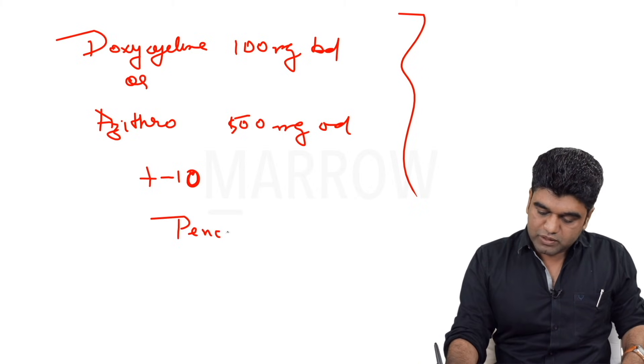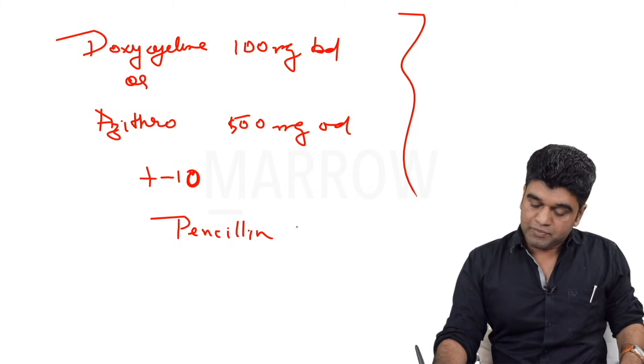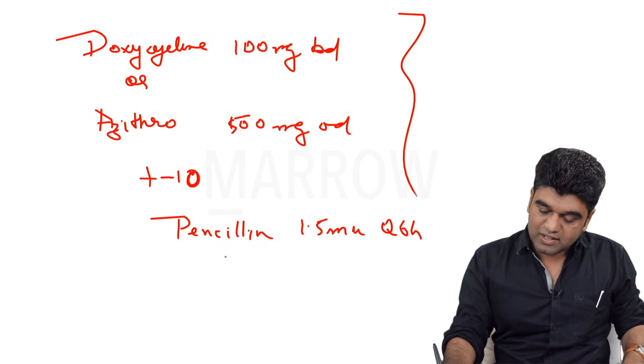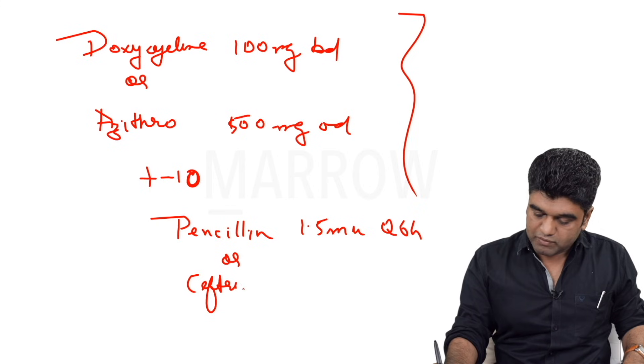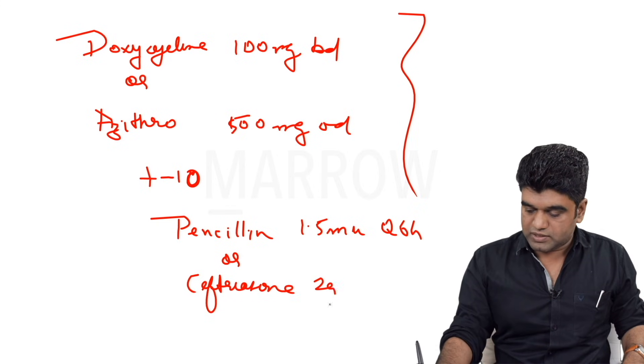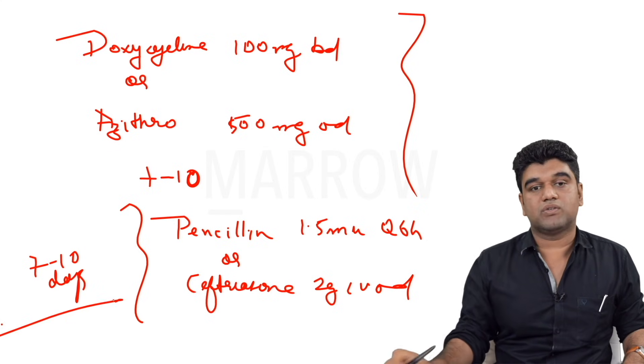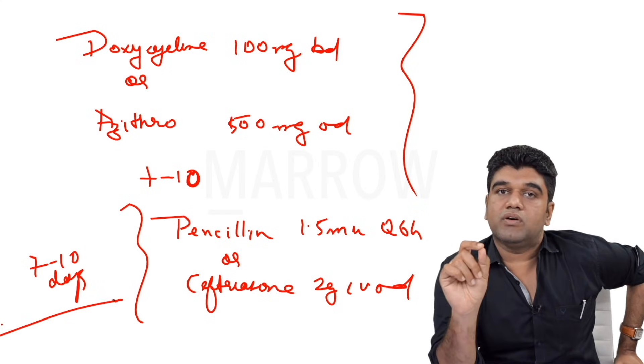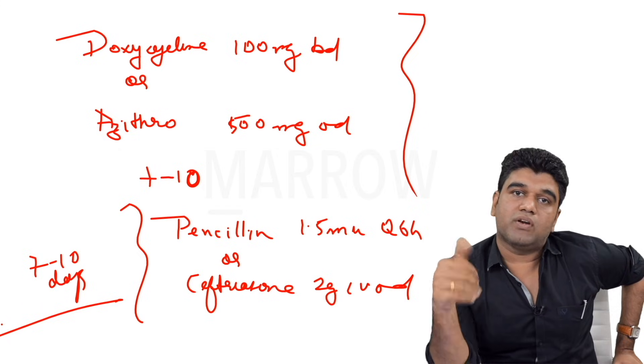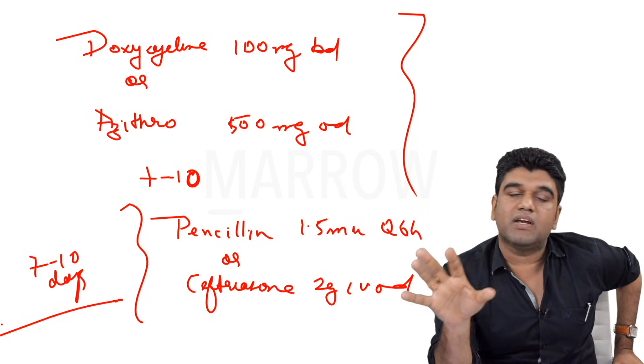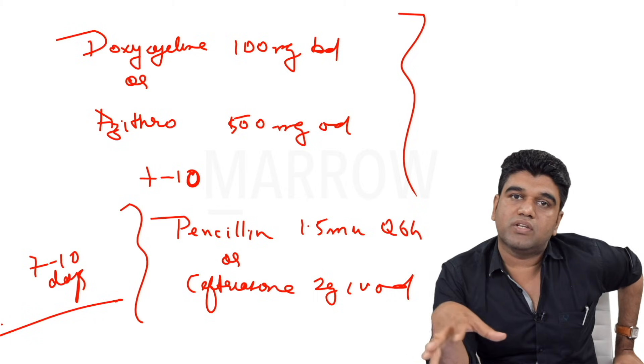If you clinically feel that it is lepto, if you clinically have a high suspicion of lepto, having started doxy is perfect. But it's always better that you give the patient a shot of penicillin, 1.5 million units Q6H, not a shot - so many shots - or ceftriaxone 2g IV OD. And this has to be given for seven to ten days. As per the textbook, mild cases require only doxy. Moderate and severe cases require this. But there is no classification as to who is mild, moderate and severe.